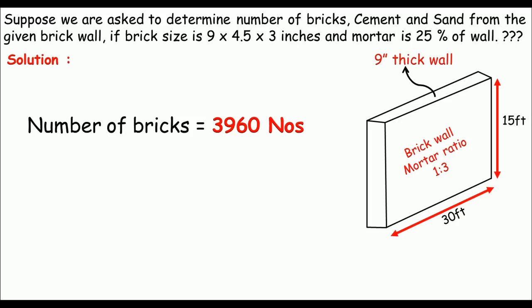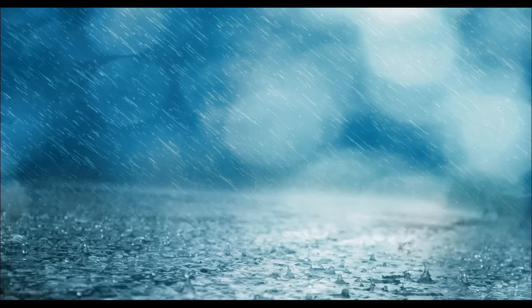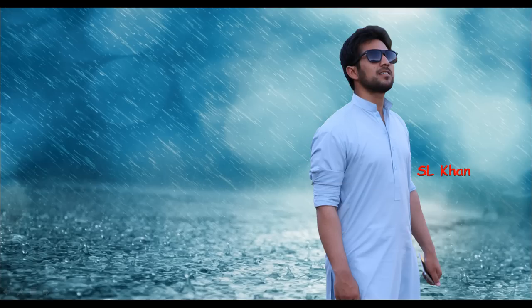So for the given wall: number of bricks = 3960, cement = 21.5 bags, and sand = 80.367 cft. That's how we analyze brickwork. If you like the video, make sure you thumbs up and subscribe. Thank you for watching, see you next time.